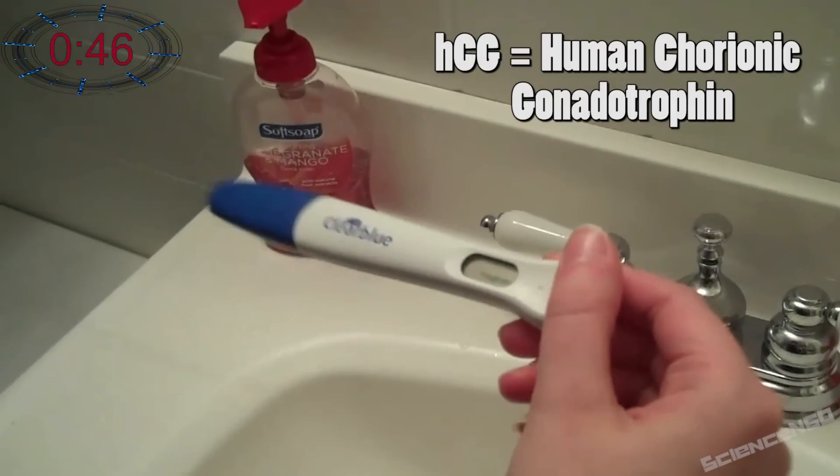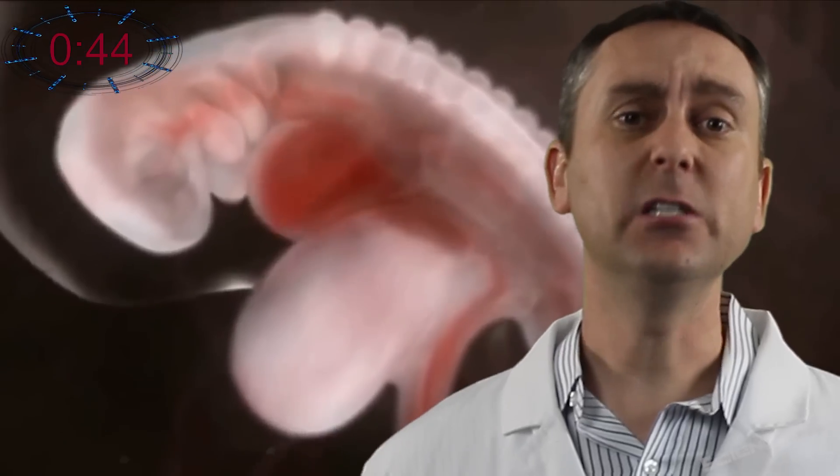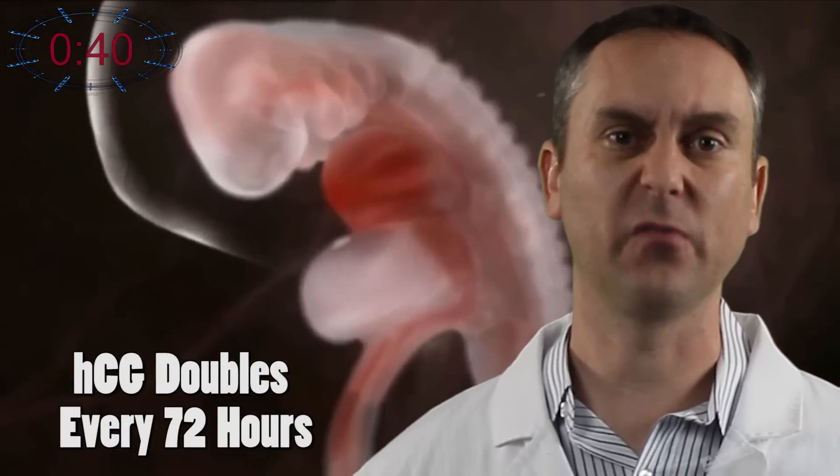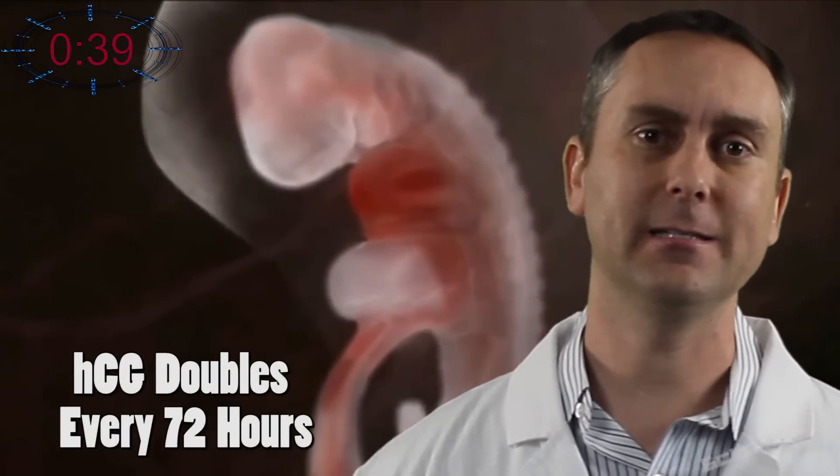It's the same hormone an at-home pregnancy test looks for. The body isn't used to HCG in its system and it doubles every 72 hours for the first 12 weeks of a pregnancy. Then it starts to taper off.